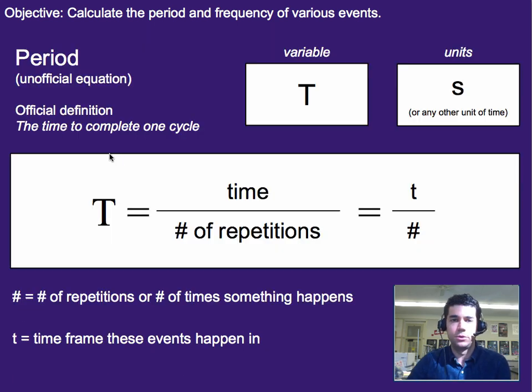And really, it boils down to this way of calculating it. Now this is an unofficial equation, meaning you're not going to see this in your textbooks or things along those lines, but it's something we've developed to really help students understand this a little bit better. So the variable for period is T.